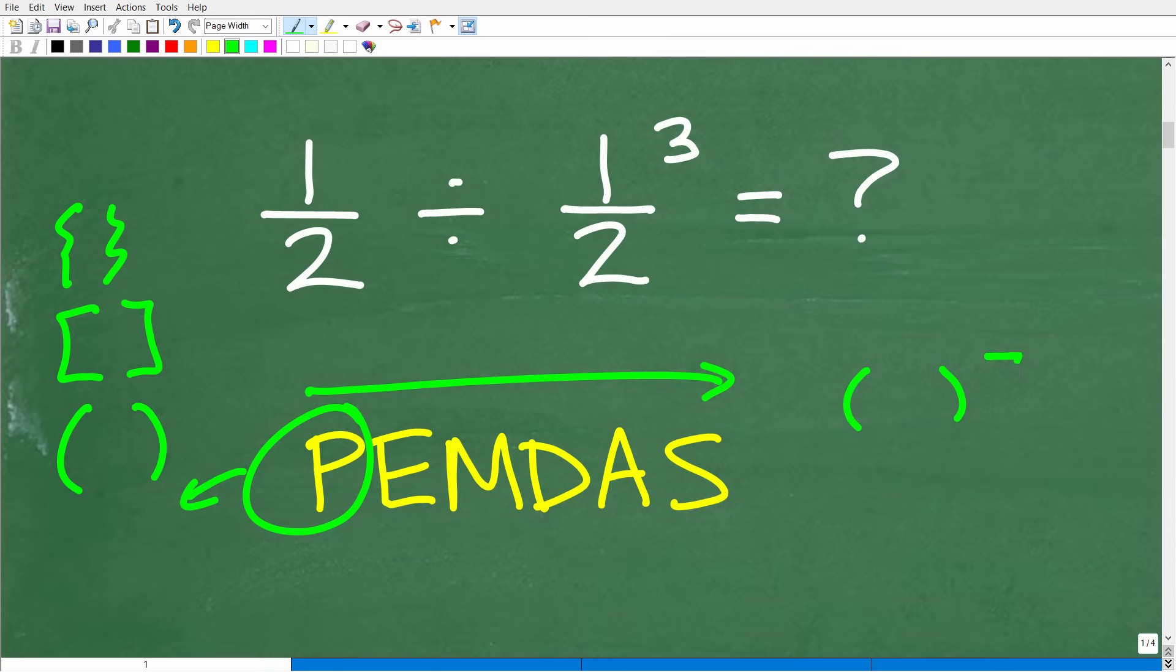So, if you have a problem with multiple parentheses and brackets, you always work for the innermost parentheses first. Okay, then you kind of work your way out.